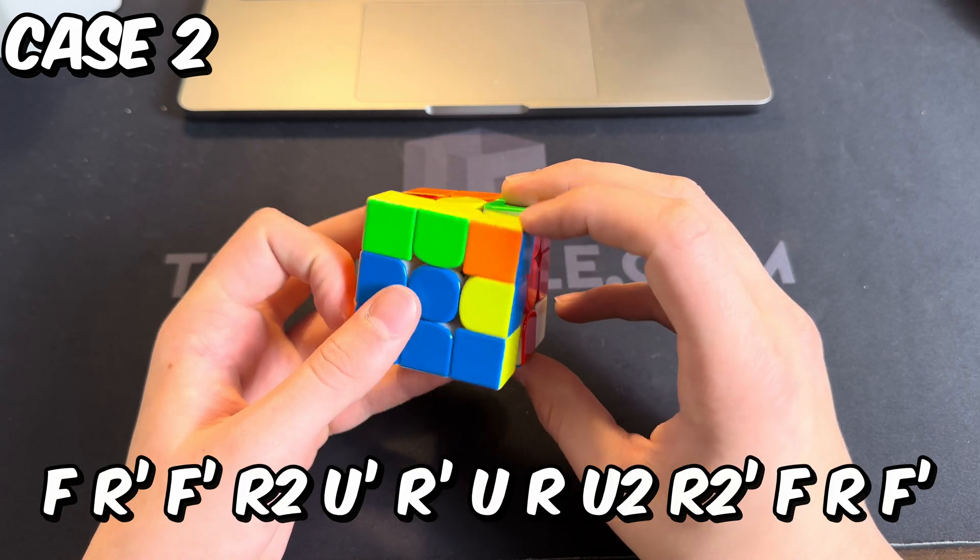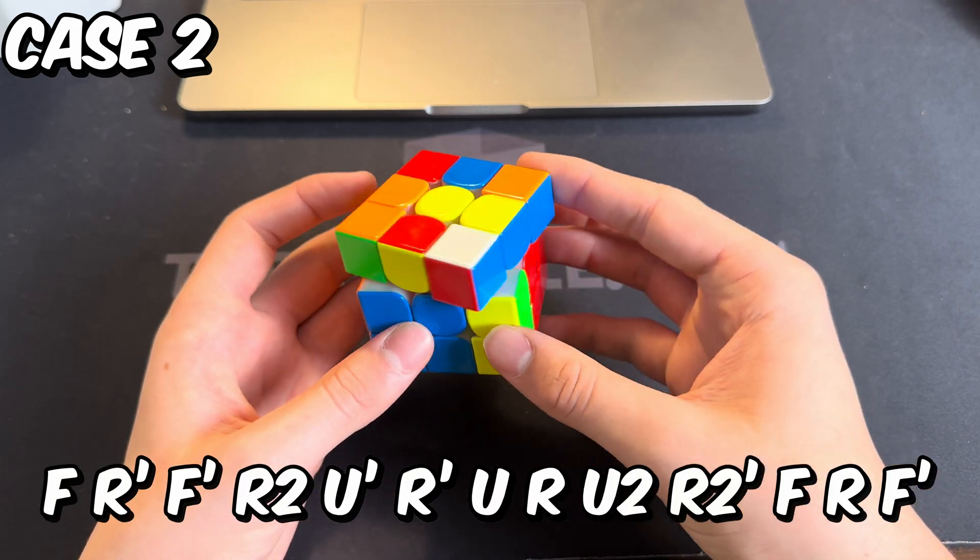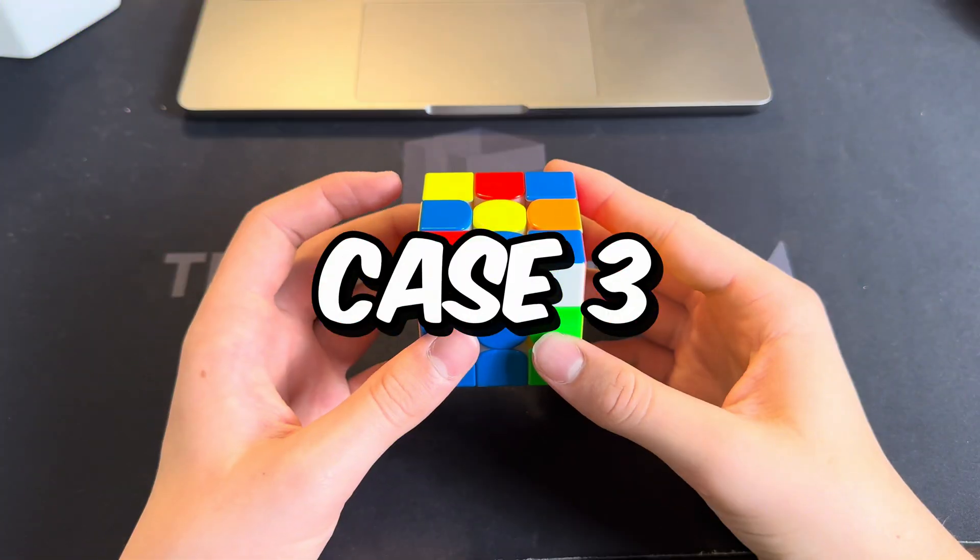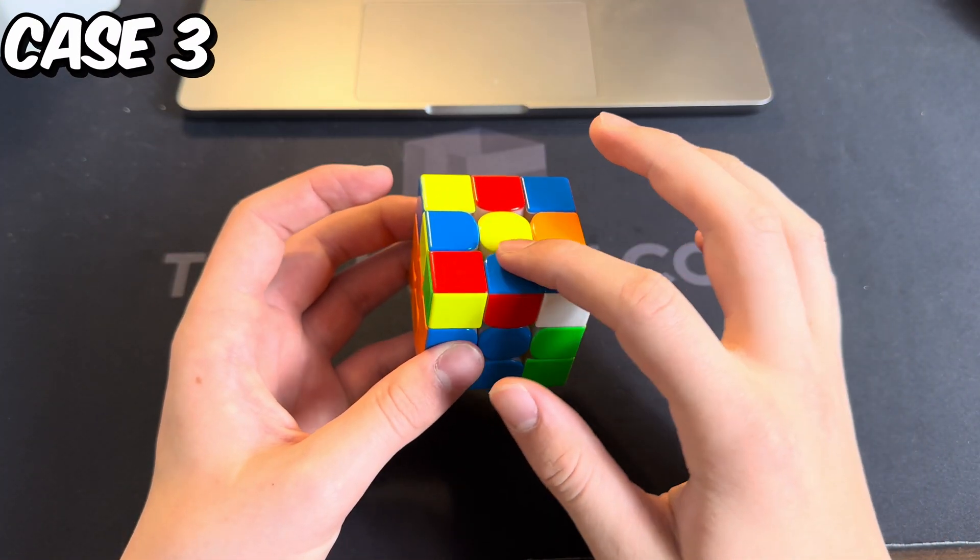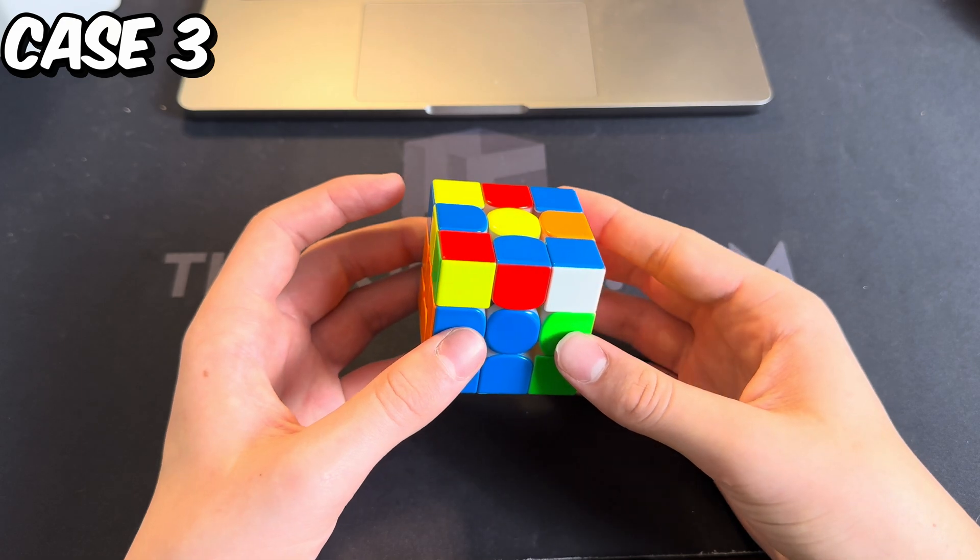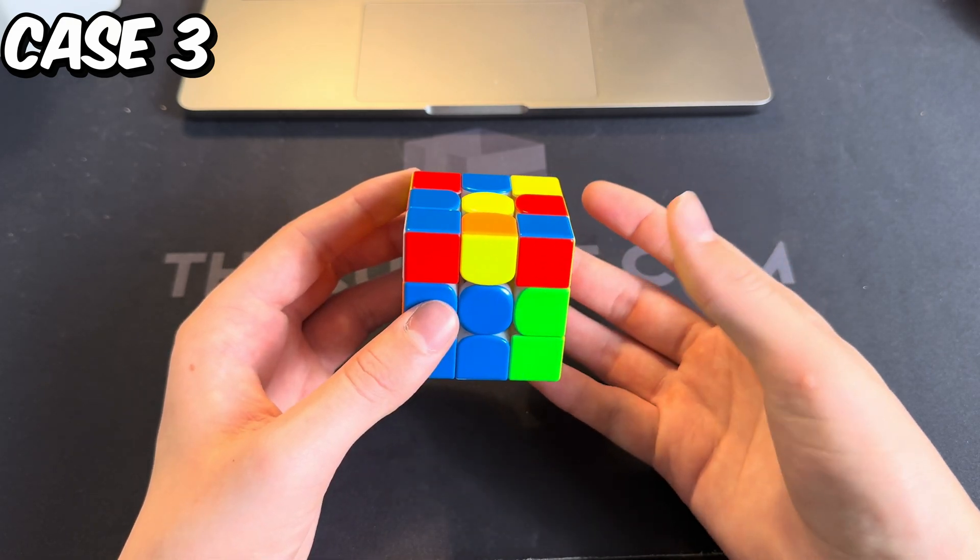For this next case where you have white in the front and blue on top is matching, you start it off by doing a U move and the algorithm goes like this.